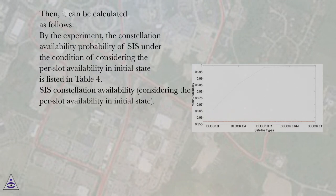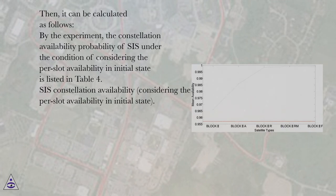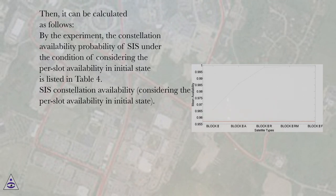Then it can be calculated as follows. By experiment, the constellation availability probability of CIS under the condition of considering the per-slot availability in initial state is listed in Table 4 — CIS constellation availability, considering the per-slot availability in initial state.